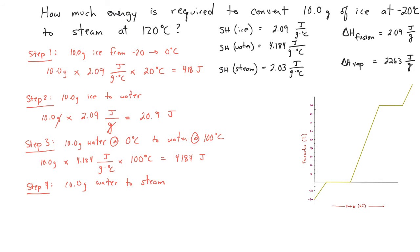Step four: convert our 10 grams of water into 10 grams of steam. For that we use the enthalpy of vaporization. We do 10 grams times 2,263 joules per gram, which gives us 22,630 joules for step four.